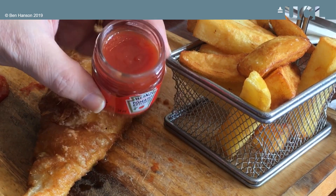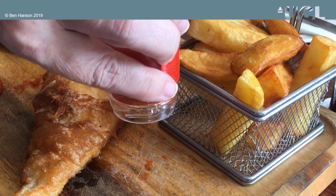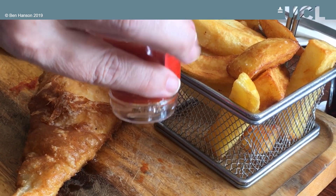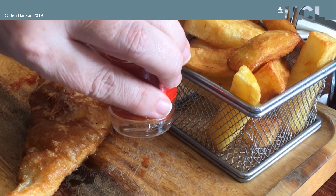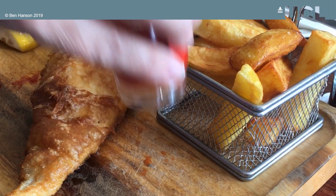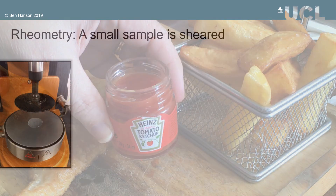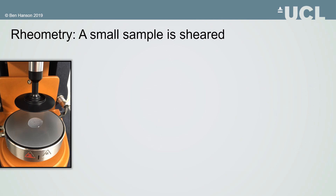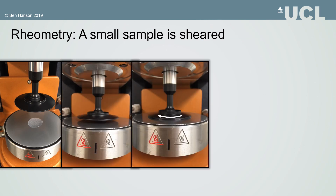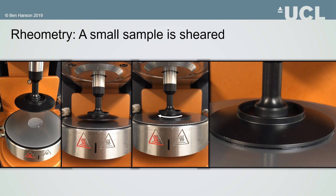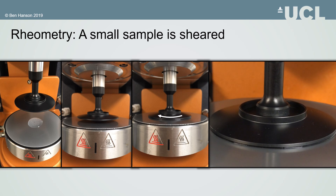Some thicker liquids also have a yield stress, which means that the fluid won't flow at all unless it's pushed with a stress greater than the yield stress. In this study we included a range of liquids from Newtonian glycerol mixtures to gum-based thickened liquids. We measured them at a range of shear rates relevant to swallowing, using a laboratory rheometer.